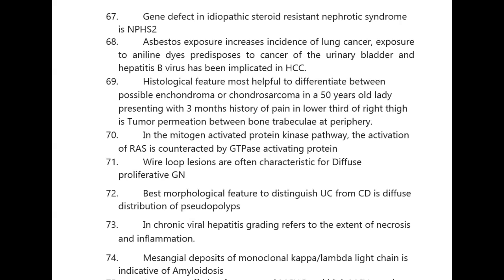The histological feature most helpful to differentiate between enchondroma and chondrosarcoma in a 50-year-old lady presenting with 3 months history of pain in the lower third of the right thigh is tumor permeation between bone trabeculae at the periphery.